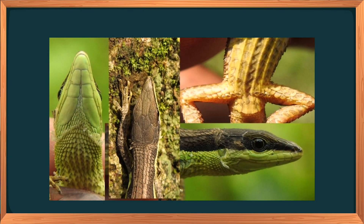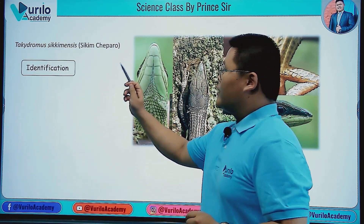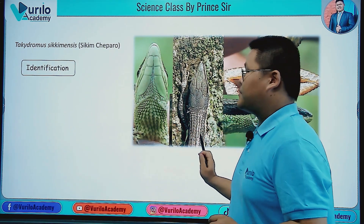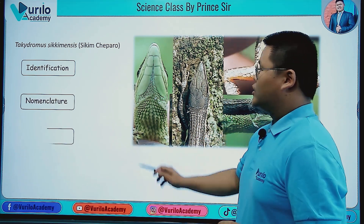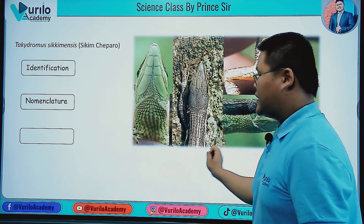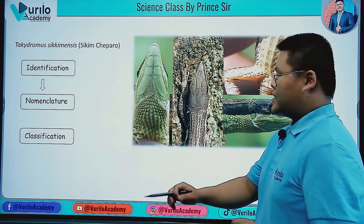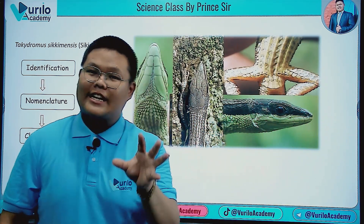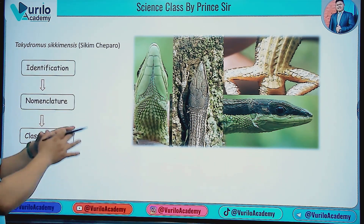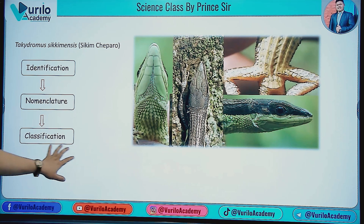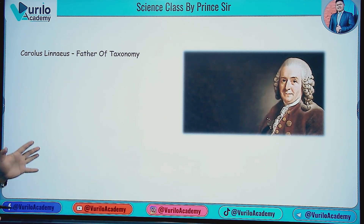The steps are: first, identification; then nomenclature — providing a name. For example, the name given is Tachydromus sikkimensis. Then, classification: taxonomically, this organism is classified. So the three steps are identification, nomenclature, and classification.